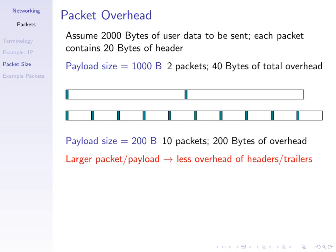First, packet overhead due to headers or trailers. Consider an example where we have 2000 bytes of data to send from A to B, with a 20-byte fixed header and no trailer. With a payload size of 1000 bytes, we need two packets, each containing 1000 bytes of payload plus 20 bytes of header. To transmit all user data, we actually transmit 2000 bytes plus 40 bytes of overhead. The blue rectangles in the top diagram represent the header, the white rectangles the payload.